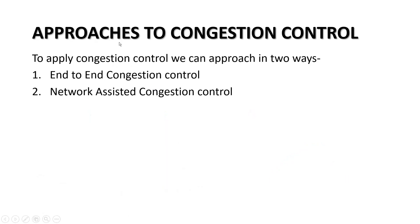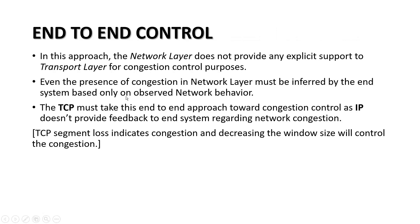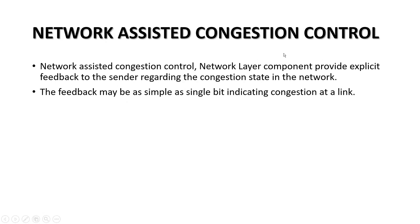Now, moving to approaches to congestion control. There are two approaches: first is end-to-end congestion control, and the other is network-assisted congestion control. In end-to-end congestion control, the TCP connection takes feedback only from the end-to-end entities. Network-assisted congestion control is more important, as it takes feedback from network elements occurring inside or intermediate to the transmission.